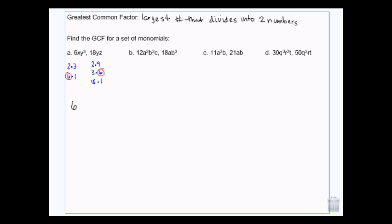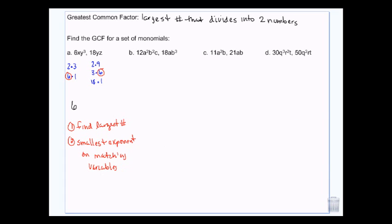And then I look at my variables. We find the largest number, and then we look at our smallest exponent on matching variables. So 6 is the largest number that goes into both 6 and 18. I have an x here but no x here, so x won't be a factor. I have three y's here but only one y here, so only one y can go into both of them. I have no z's here and a z here, so z is not going to be in both. So the GCF uses only one y.